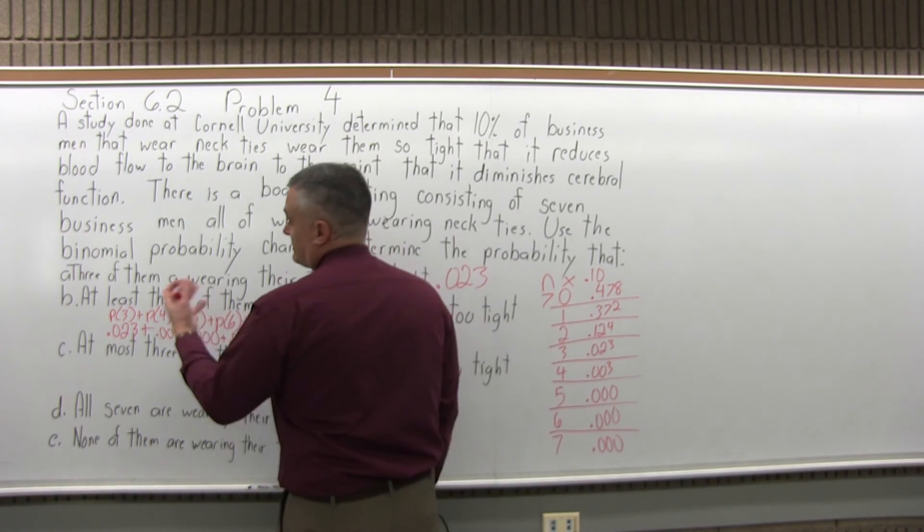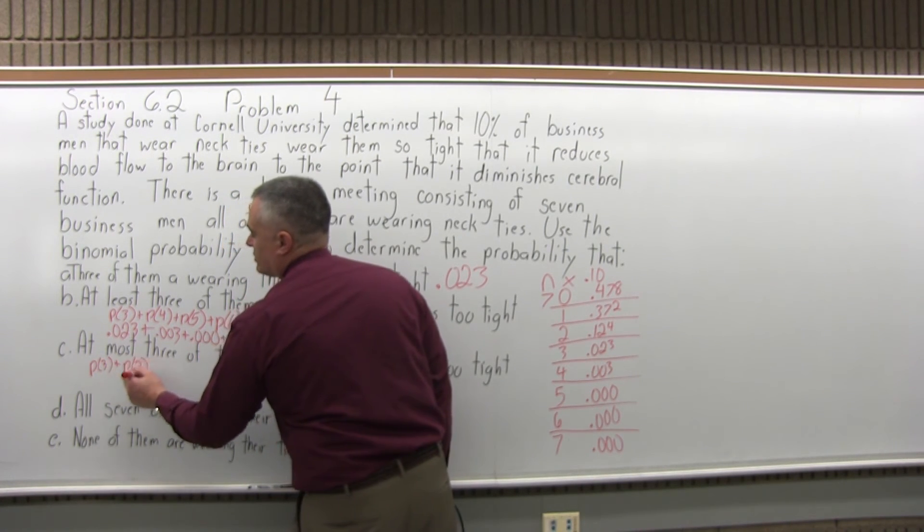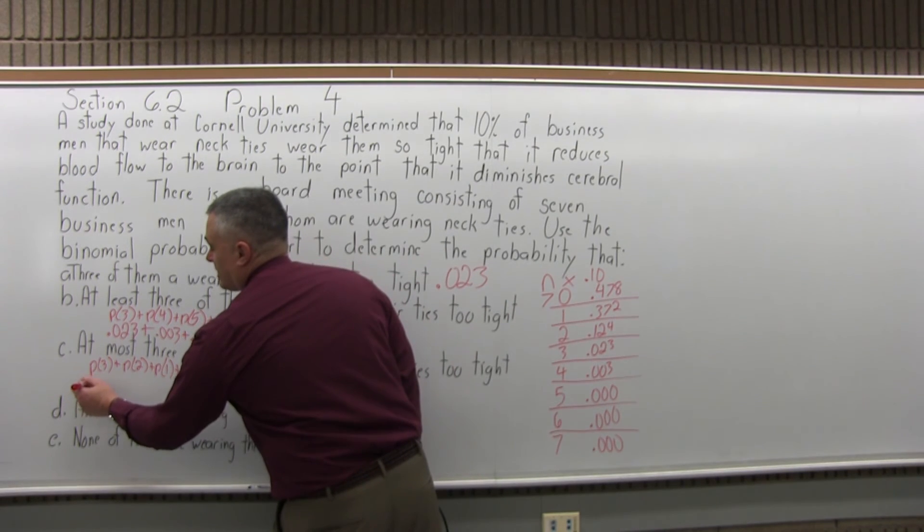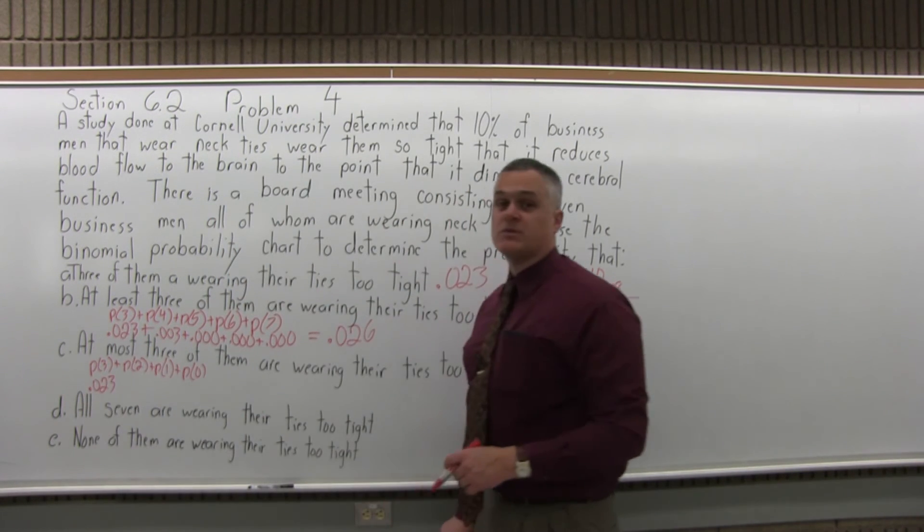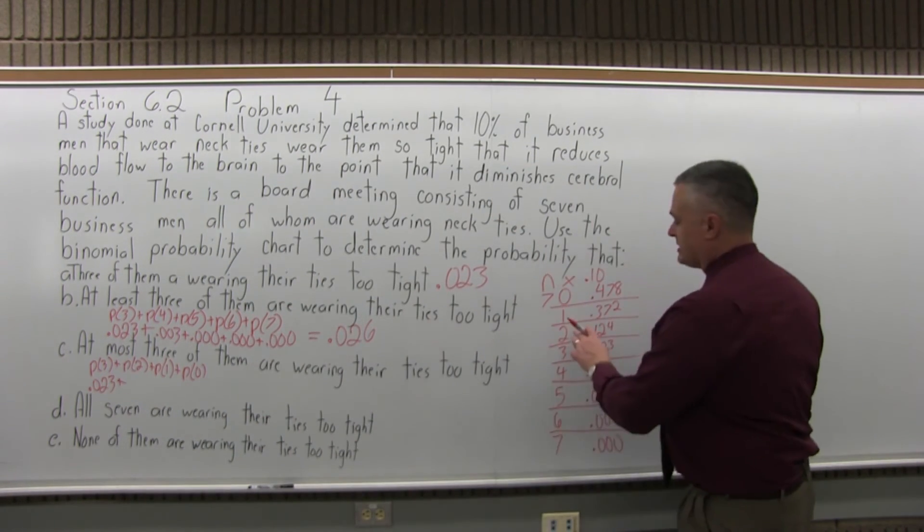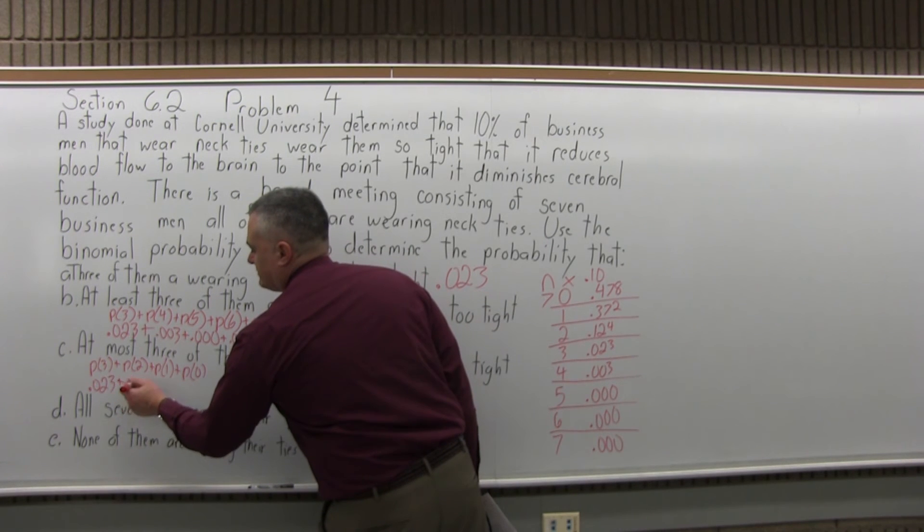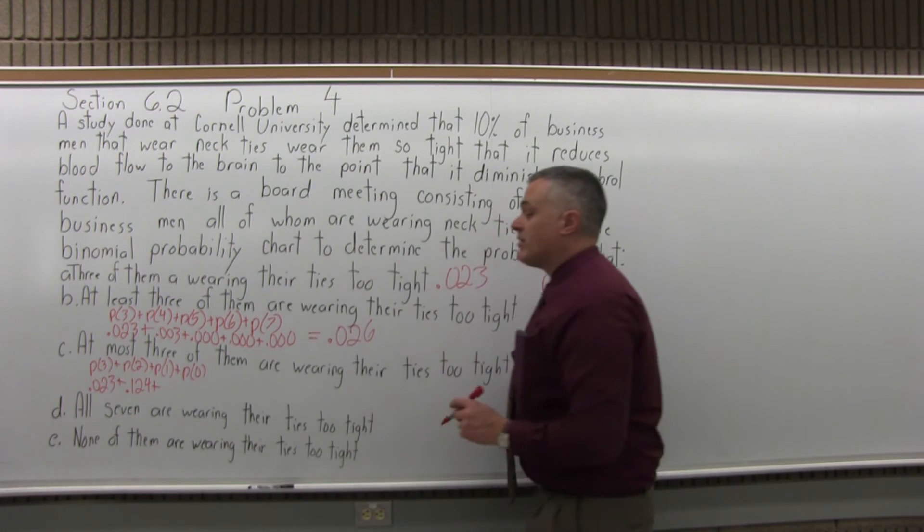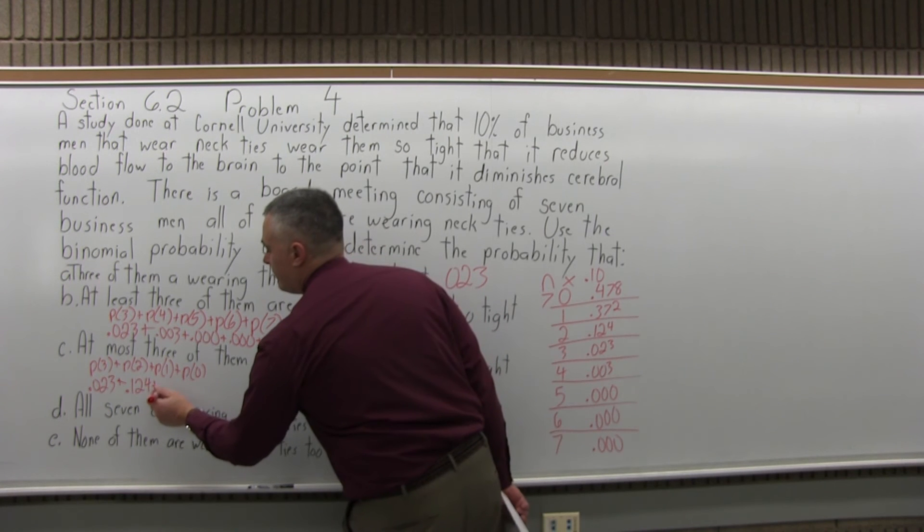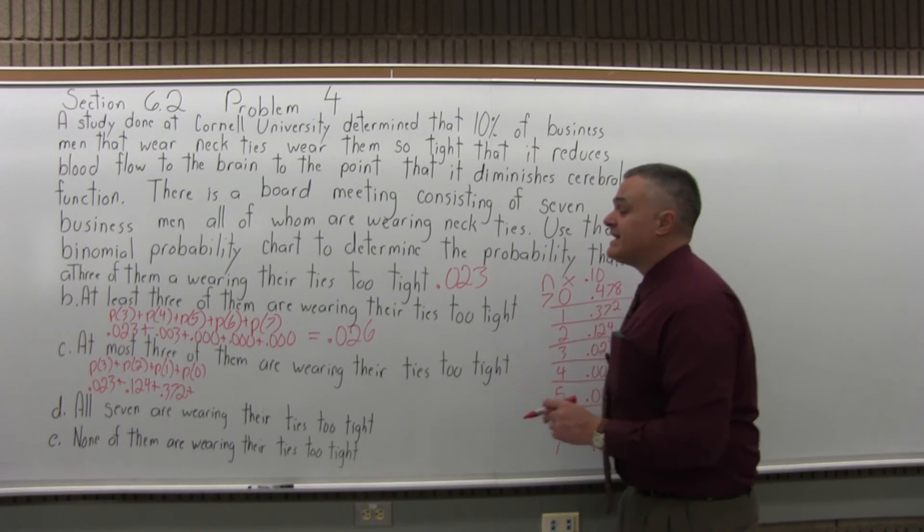For three, since we've used it a few times, let's write out what we're going to do. It's the probability for three, plus the probability for two, plus the probability for one, plus the probability that none of them have their ties on too tight. The probability of three, since I used it a minute ago, I remember it's .023. Now for two, I'll go to the part of the chart that I wrote out and look it up. I go next to the two, and the probability of two is .124, plus the probability for one. Going back to the chart, probability for one is .372, plus the probability for zero, for zero is .478.